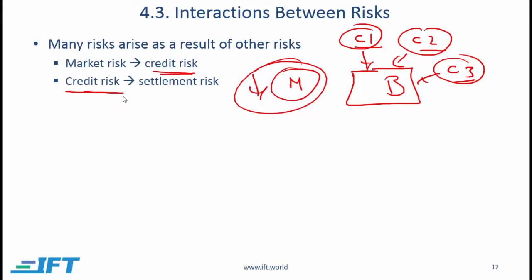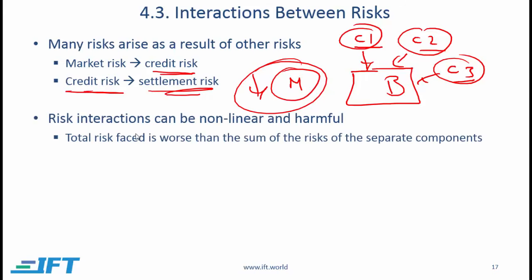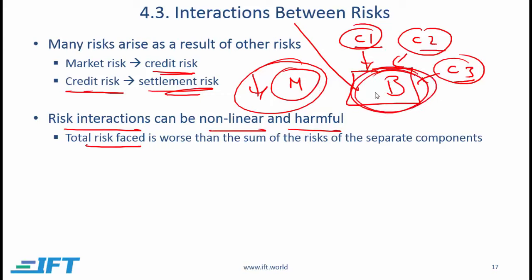If credit risk goes up, it is possible that settlement risk will also go up. Risk interactions can be non-linear and harmful — the total risk faced is often worse than the sum of the risks of the separate components. In this example, separately considering market risk and credit risk does not tell us the full picture; the overall risk faced by the bank will be more than the sum of market risk and credit risk individually.